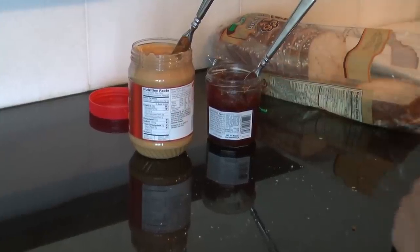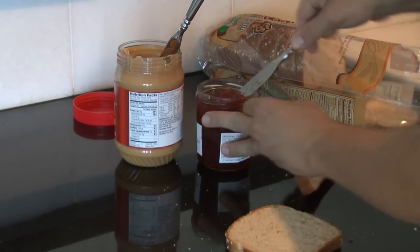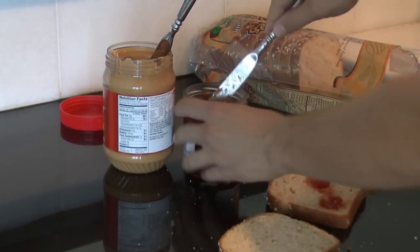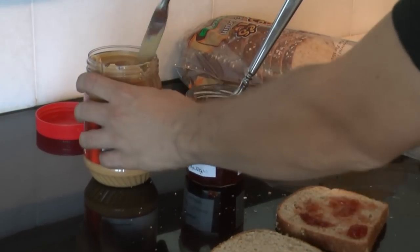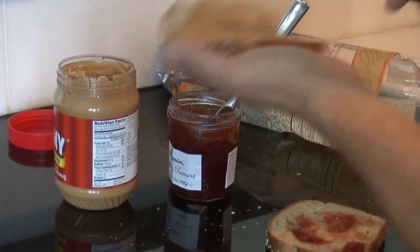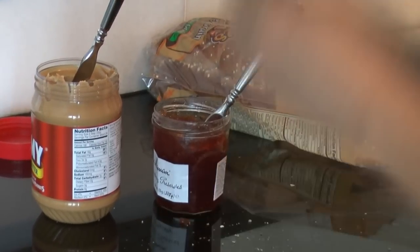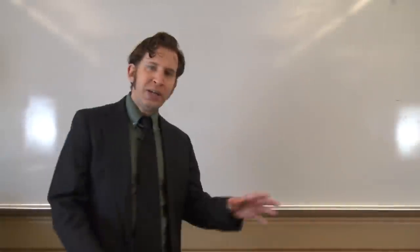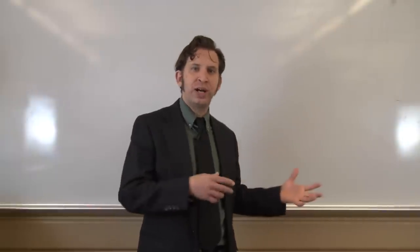There are four primary steps to make a peanut butter and jelly sandwich. One, remove two slices of bread. Two, spread jelly on one slice. Three, spread peanut butter on the other slice. Four, place slices of bread together with jelly and peanut butter sides facing one another. Five, eat. Yeah, exactly.